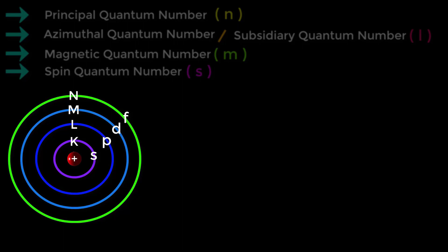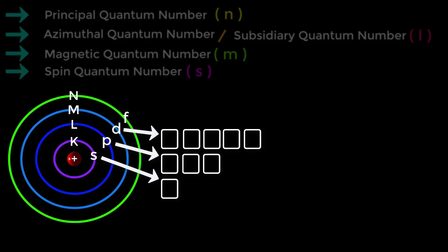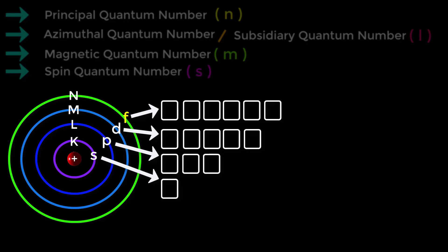In these sub-shells there are orbitals. In S sub-shell there is only one orbital. In P sub-shell there are three orbitals. In D sub-shell there are five orbitals. In F sub-shell there are seven orbitals: 1, 2, 3, 4, 5, 6, and 7.